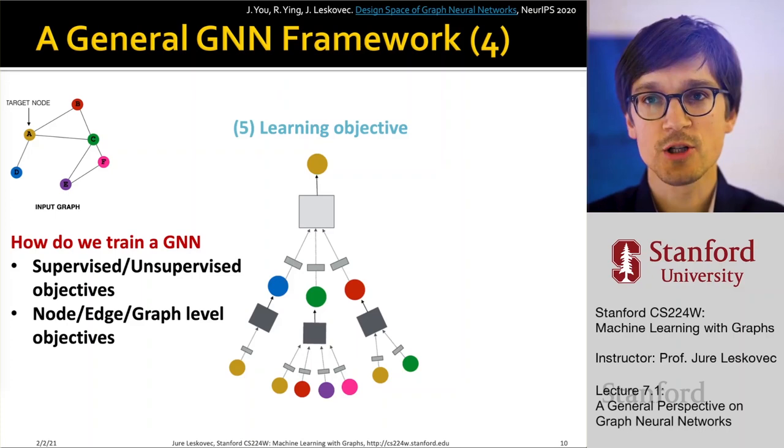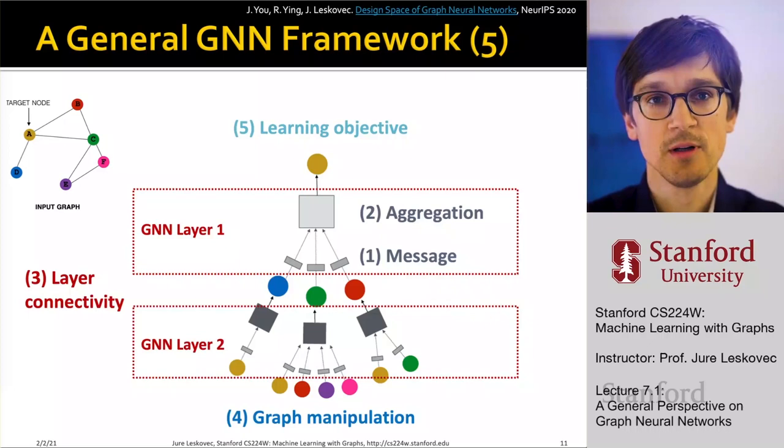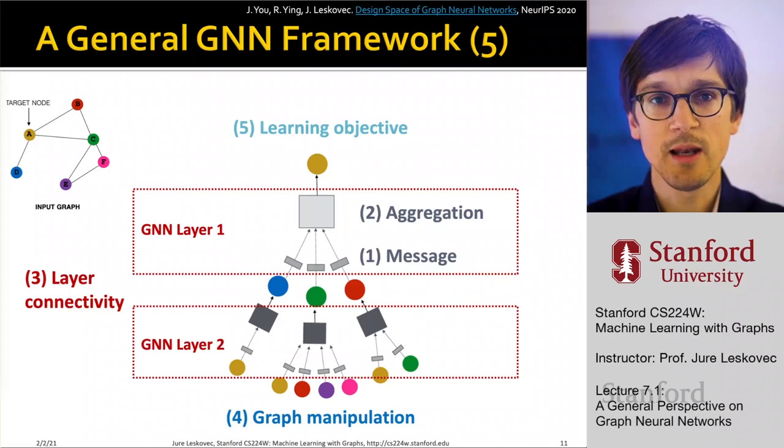So these are essentially now gave you kind of an overview of the parts of the design space for graph neural network architectures. So as I said, first is defining the layer, then it's defining connectivity between layers, it's about layer connectivity, it's about graph manipulation, augmentation, feature augmentation, as well as finally, the learning objective. So these are the five pieces we are going to talk about.